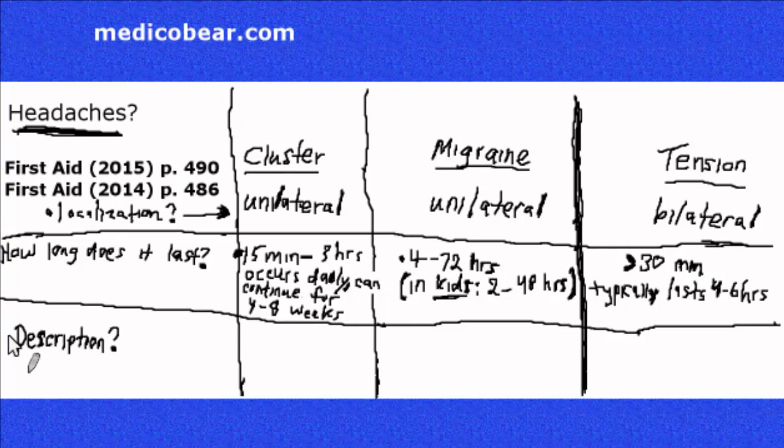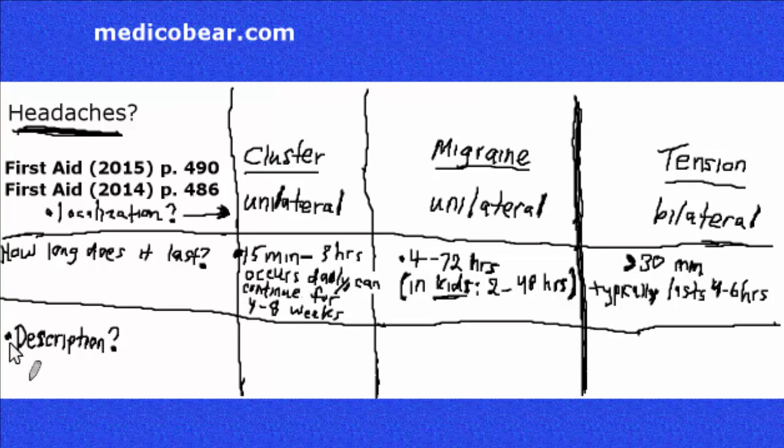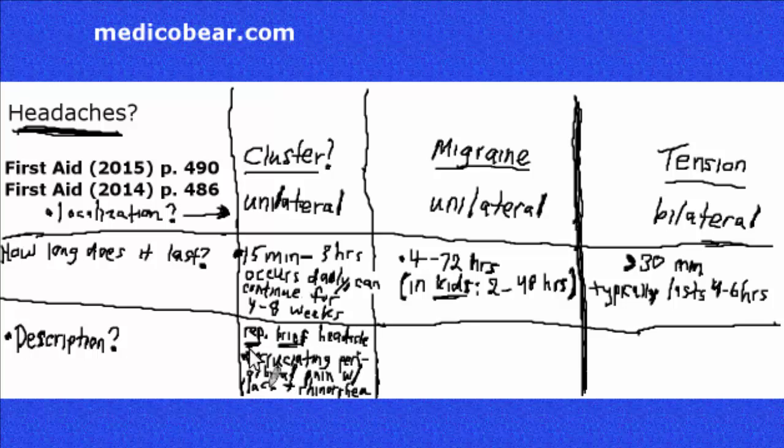Probably the most valuable information to know is a description of each headache. What is each one like? The cluster headache is repetitive. It's a brief headache. Cluster headaches can present as excruciating periorbital pain with lacrimation. I put L-A-C, lacrimation, plus rhinorrhea.